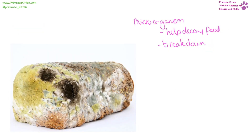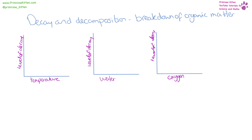Microorganisms are part of the system of biotic and abiotic factors that help break down old things — for example old food — so that the components can be recycled back through the system. Decay and decomposition are the breaking down of organic matter and this generally happens by microorganisms. Since microorganisms are alive, we need to think about how temperature, water, and oxygen affect the levels of decay.